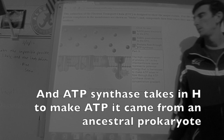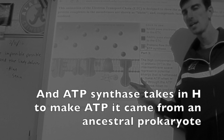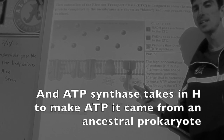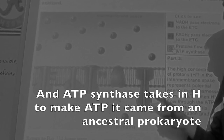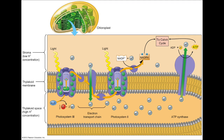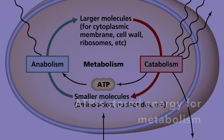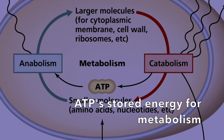An ATP synthase takes ADP to make ATP. It came from an ancestral prokaryote. An ATP synthase you'll also see inside the chloroplast of plant cells. Endosymbiosis, yeah.